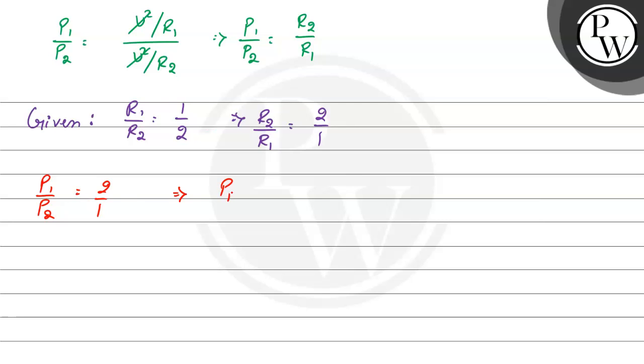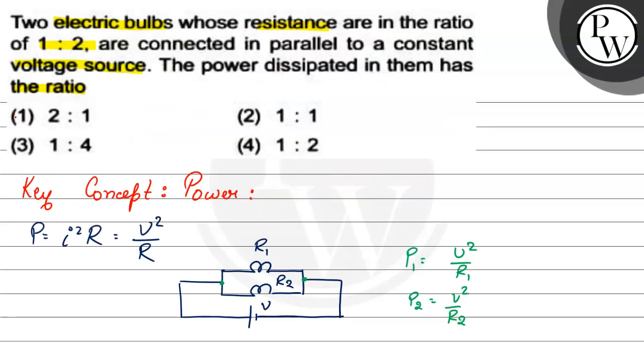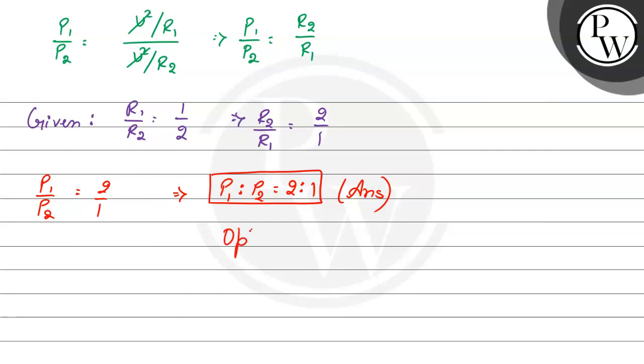So, we can say from here that P1 is to P2 will be equals to 2 is to 1. This will be our final answer. Now, if we check the correct option, the correct option will be option number 1, 2 is to 1. So, the correct option will be option 1.